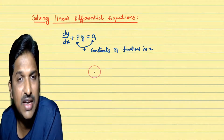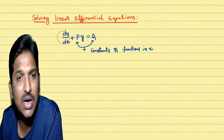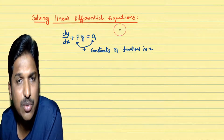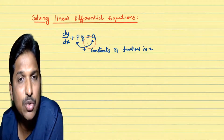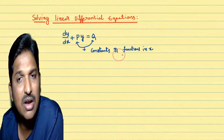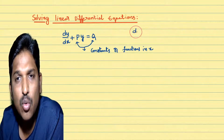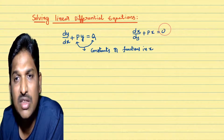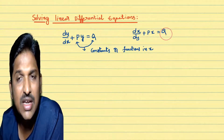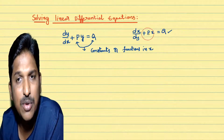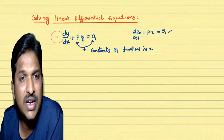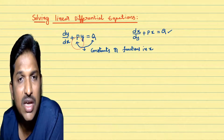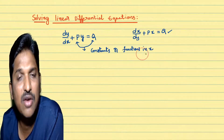What is a linear differential equation? A differential equation of the form dy by dx plus py equal to q is called a linear differential equation. Here, p and q are constants or functions in x. Another form is dx by dy plus px equal to q, which is also called a linear differential equation. In this class, we will mainly concentrate on dy by dx plus py equal to q, where p and q are constants or functions in x.